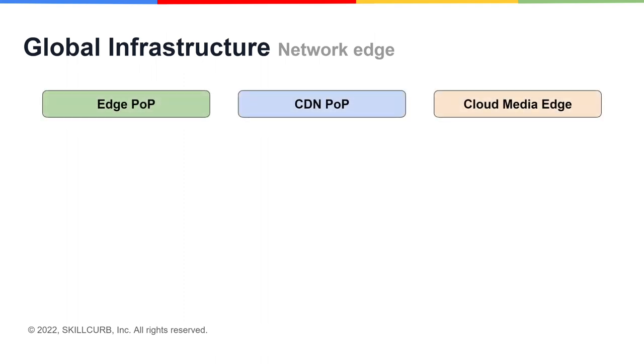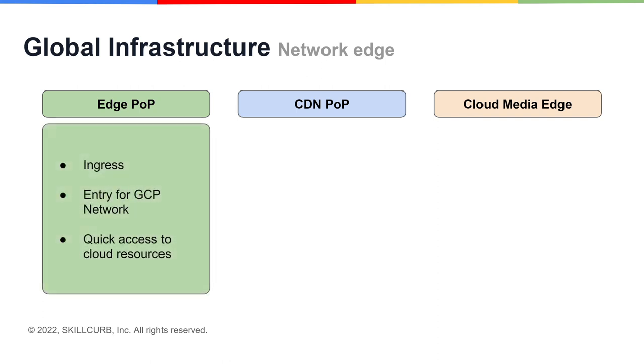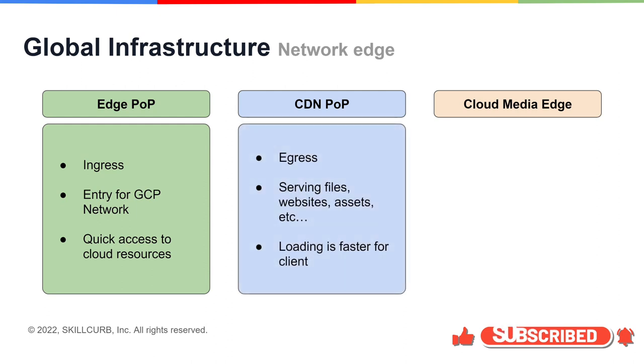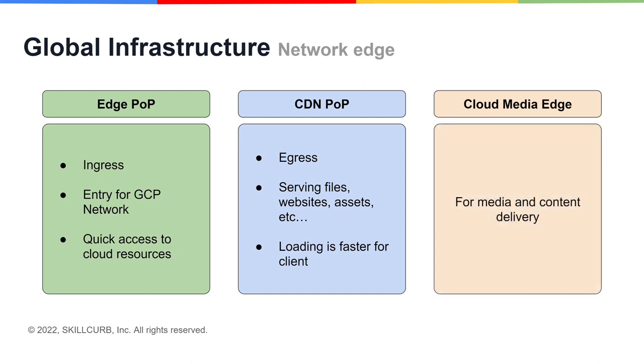The network edge sits at the edge of the network and allows you access into the internet. Beyond the network edge, there are actually three types of POPs: Edge POP, CDN POP, and Cloud Media Edge. An Edge POP is an ingress point, meaning it's your entry point to quickly get in and access your GCP resources. A CDN POP is an egress point, meaning it's for the quick delivery of files, assets, and cached websites. Cloud Media Edges are specifically for content delivery such as videos.